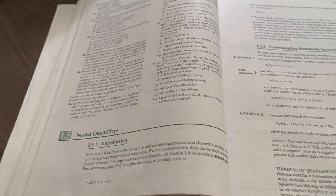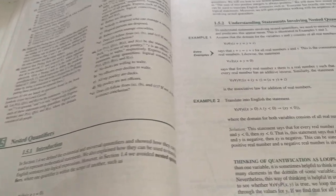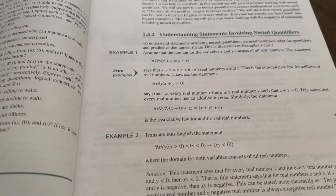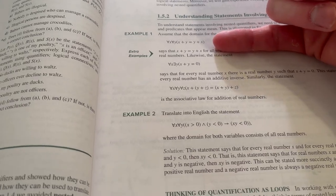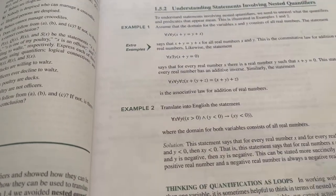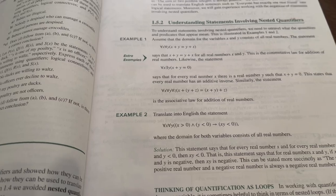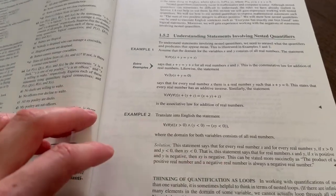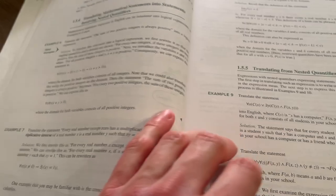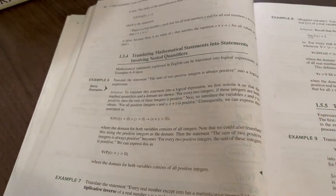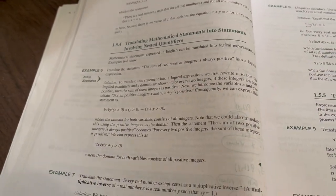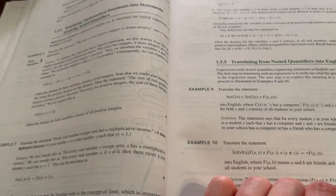Section 1.5 is on nested quantifiers. So we can have multiple quantifiers. So, for example, here we have for all x, for all y, such and such. x plus y is equal to y plus x. The order of quantifiers. Translating mathematical statements into statements involving nested quantifiers, which can be tricky at first.